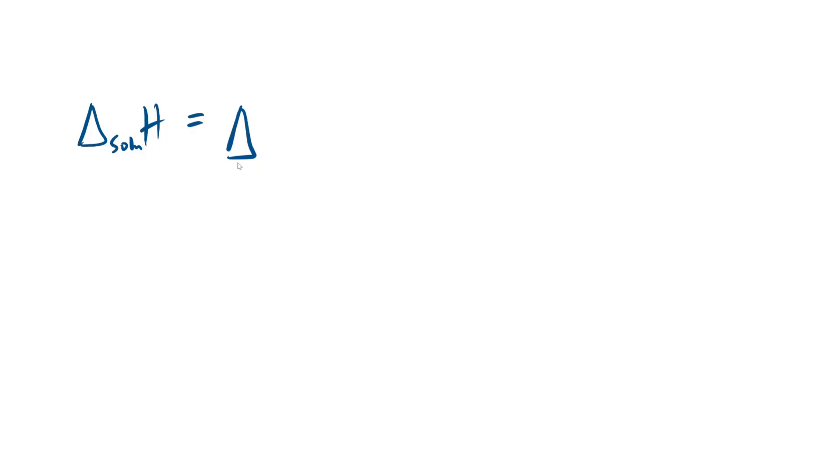All right, so our entropy change of lattice dissociation, so when our lattice, our solid ionic lattice, splits up into its constituent gaseous ions, this is the lattice dissociation enthalpy, and this is going to be plus the sum of our capital sigma, the enthalpy of hydration. So what's going to happen in the question is you're normally given a data table, but essentially they may ask you for the enthalpy of solution, in which case you would just simply use this.